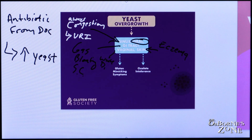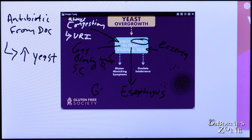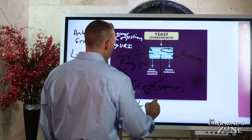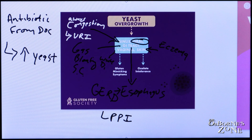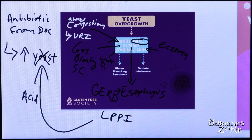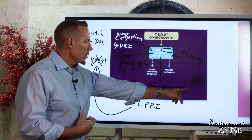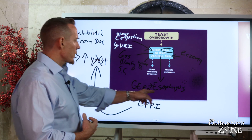One of the other places yeast has been shown to manifest is in the esophagus, which is part of the GI tract, and this can create symptoms of GERD. Many people have candidiasis that is basically damaging the esophagus. What happens is a doctor prescribes a PPI — a proton pump inhibitor — which blocks your acid production. But one of your protective mechanisms against yeast is acid. Your stomach acid is one of your intestinal barriers that protects you from yeast you might be exposed to in your food. So the yeast can manifest as GERD, or what feels like GERD — gastroesophageal reflux disease.